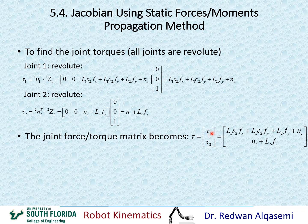If we line up tau1 and tau2 together — since we have two joints — that gives us the joint torque vector. If we had more joints, including a combination of prismatic and revolute joints, all joint taus would be lined up together. Up to this point, we have not extracted any Jacobian yet.